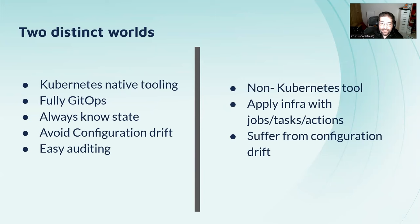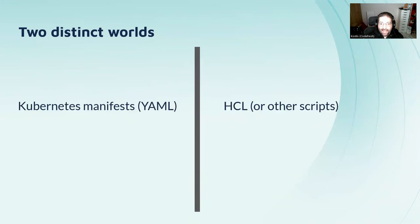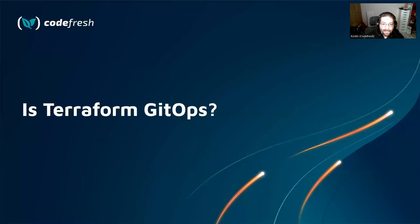So now we have two different worlds. On one side we have applications, where people use Argo CD and Flux — it's Kubernetes-native, it's fully GitOps, and those tools always give you the guarantee that what you have in Git is also in the cluster. Then there is the second world of infrastructure, not handled by Kubernetes. You create infra when you call the Terraform CLI or run a job. By default, you also suffer from configuration drift. And you have different languages to learn: YAML for Kubernetes, HCL for Terraform.